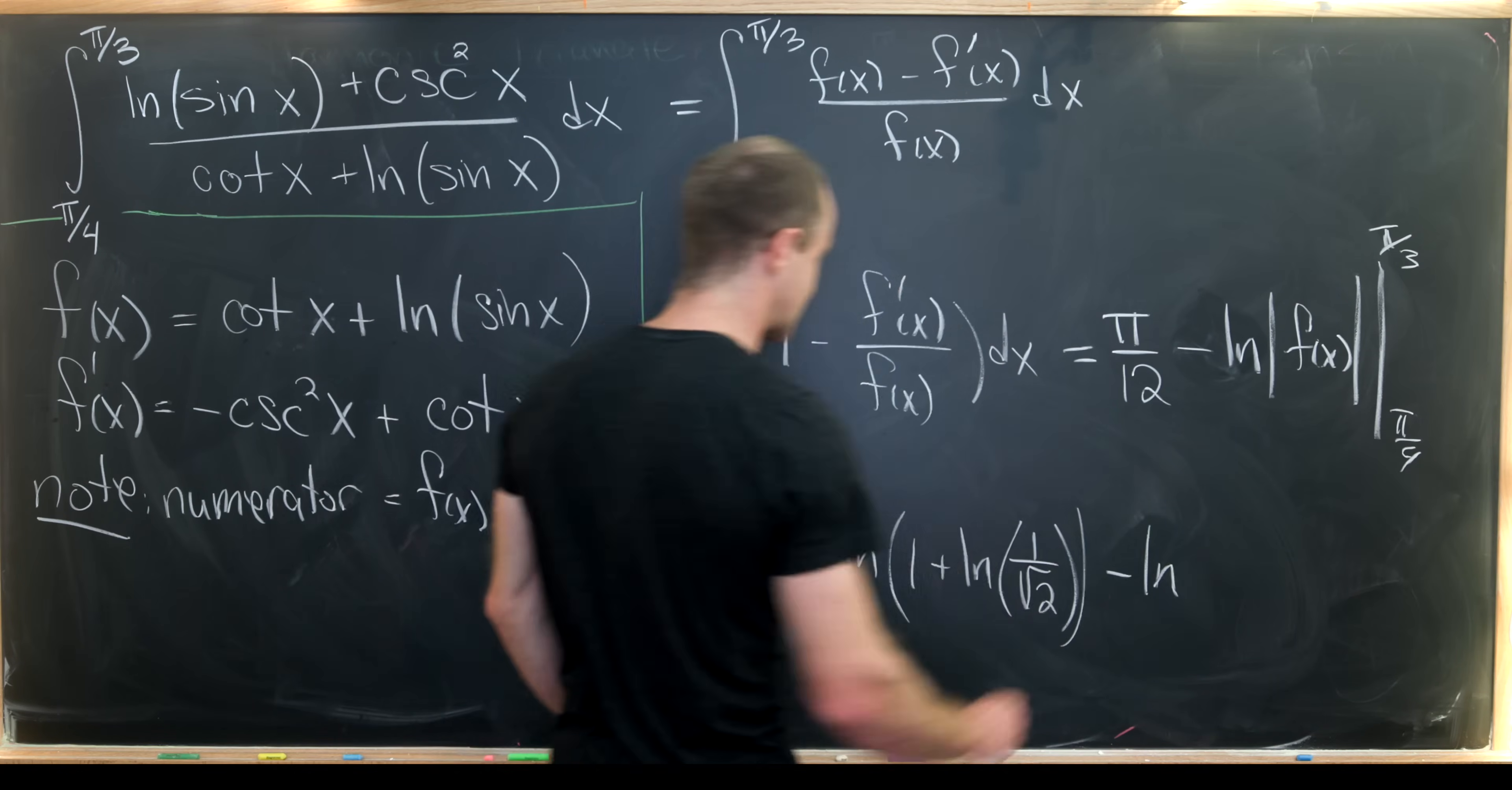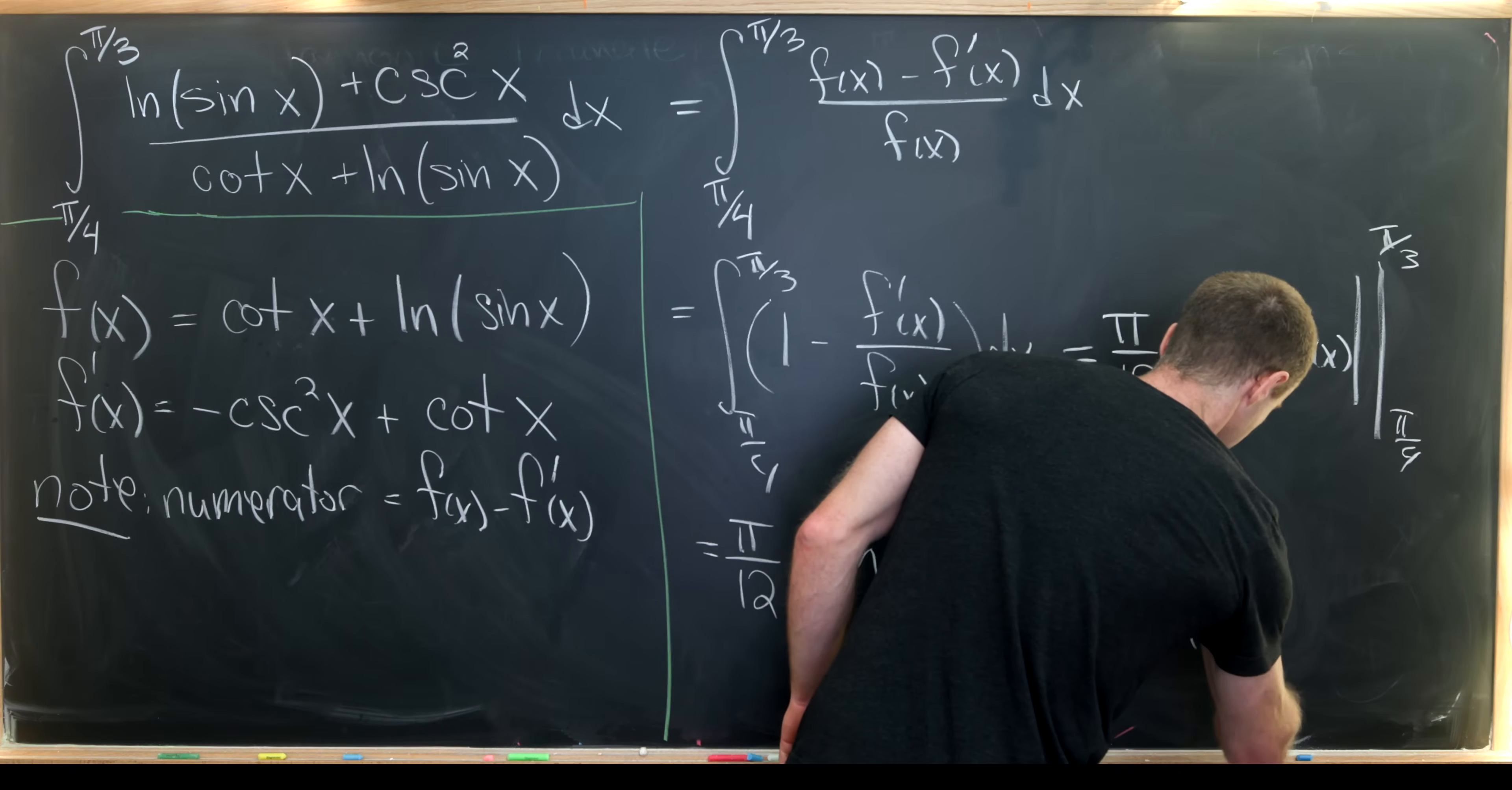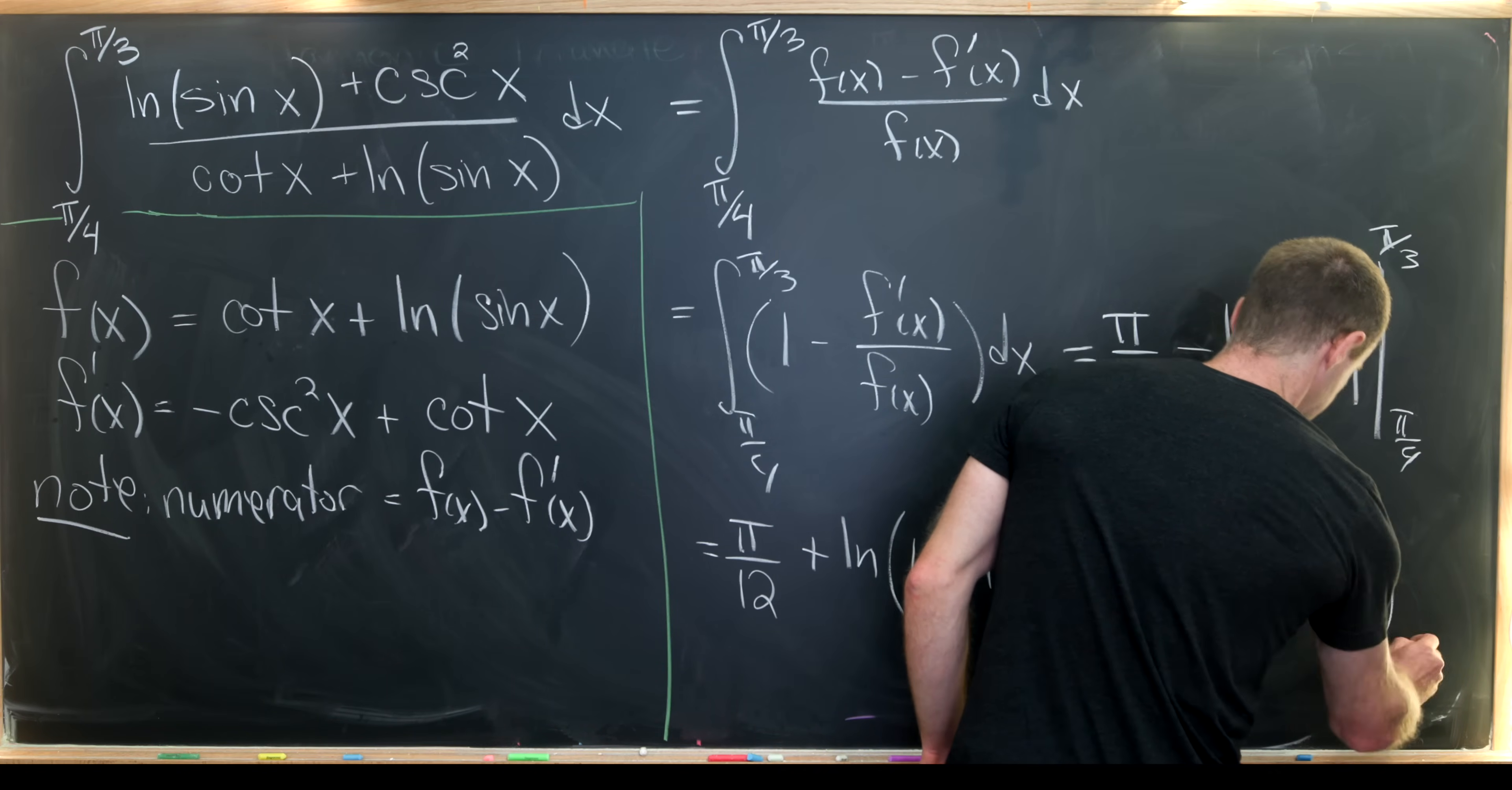Okay, and then we need to subtract off the natural log of this f of x evaluated at π/3. So let's see cotangent evaluated at π/3, it turns out that it's one over the square root of three. So that's because the cosine function of π/3 is a half, and the sine function is square root of three over two. So that's how that simplifies. And then we have plus natural log of sine evaluated at π/3, but that's going to be the natural log of the square root of three over two.